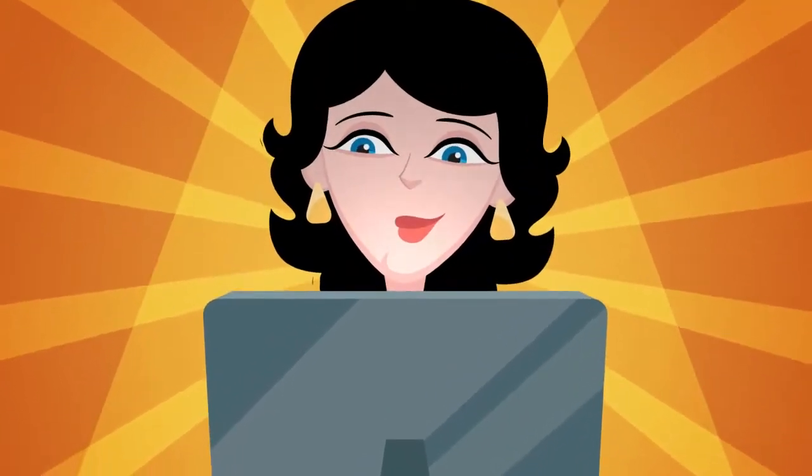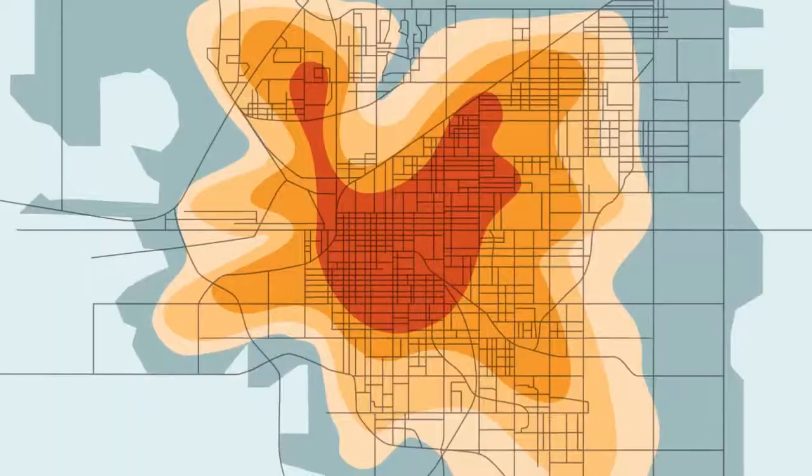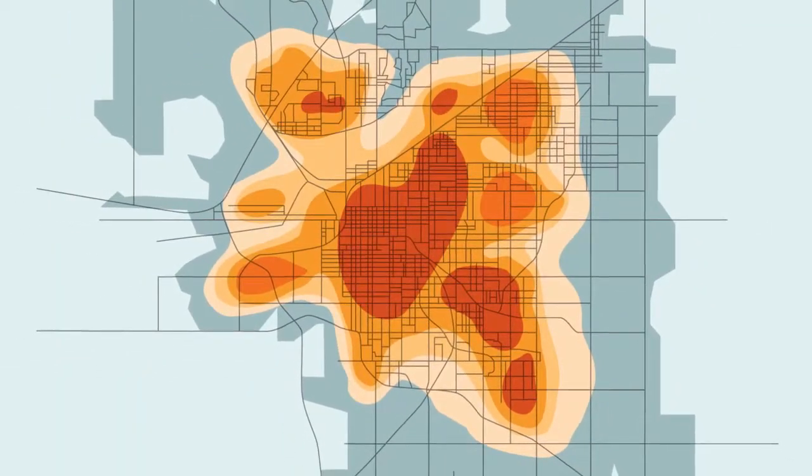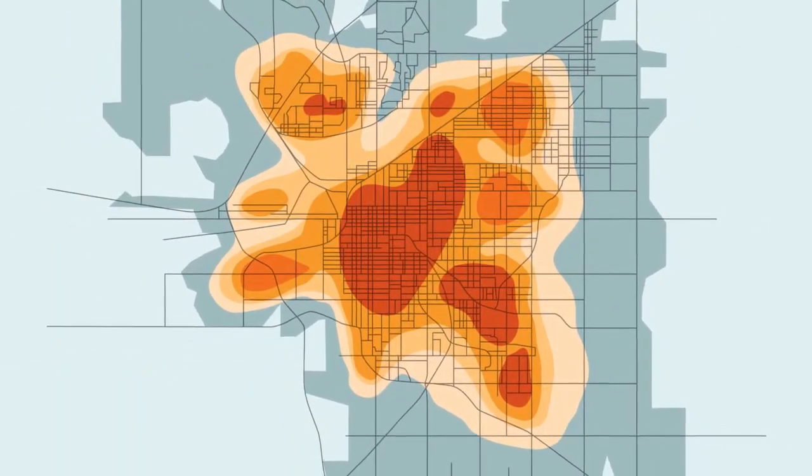What if Liz changes the criteria for what appears red and what appears blue? It's the same data, but the heat map now tells a very different story.